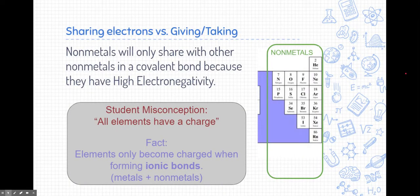So nonmetals will only share with other nonmetals. This is because they have a high electronegativity. And I want to reemphasize this because there's a big student misconception. One misconception that students have is all elements have a charge, and that's not true. Elements only become charged when forming ionic bonds, that's between metals and nonmetals. For covalent bonds, we're not going to be talking about charges because they share electrons. They don't actually give up their electrons or receive extra electrons, so they never change their original neutral charge.